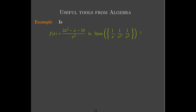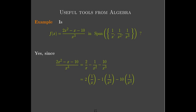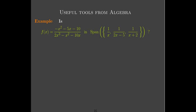Let's do some linear algebra. Given the function (2x² − x − 10)/x³, we want to know if it belongs to the span of {1/x, 1/x², 1/x³}. By distributing the division by x³ among the three terms in the numerator, we get 2/x − 1/x² − 10/x³. That is indeed a linear combination of the functions in our set, so it belongs to the span.